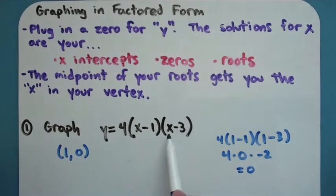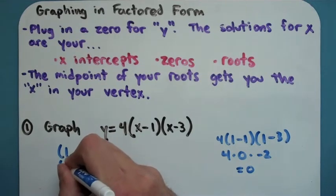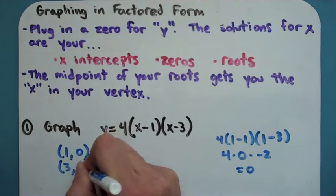Similarly, if I plug in a 3 for x, this guy ends up being 0. 0 times 2 times 4 is still equal to 0. So if I plug in a 3 for x, I also get out a 0 for y.